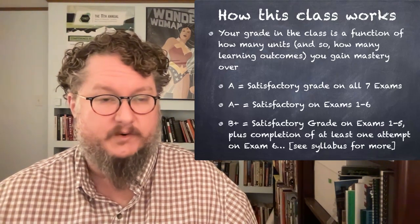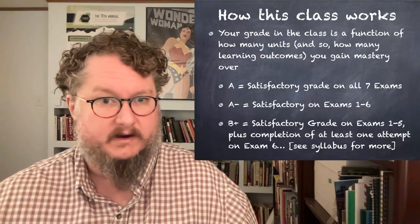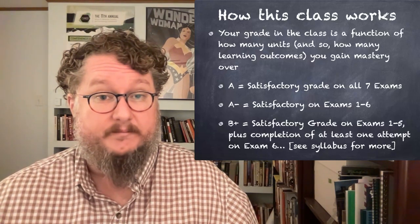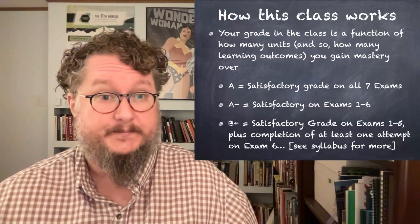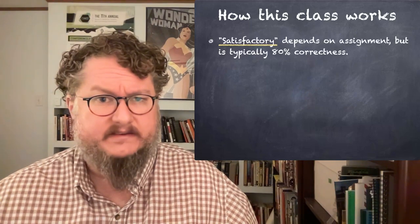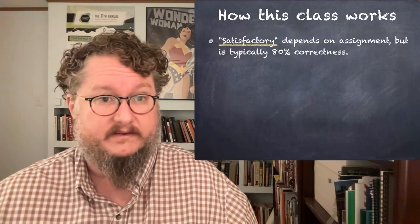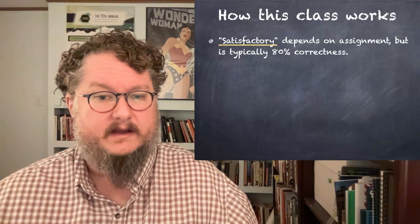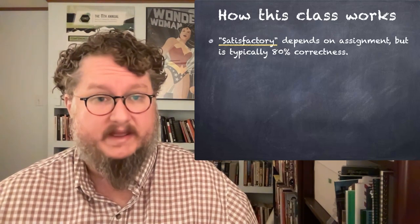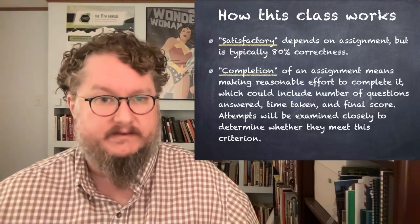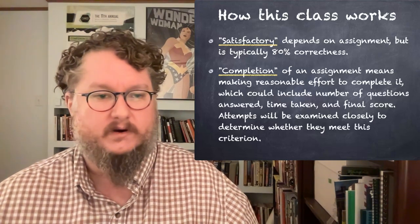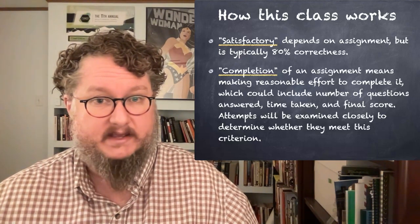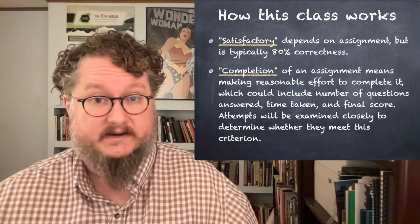So for each unit, you need to do the readings, watch the video lecture like this one and complete at least one practice problem set with the exception of this unit zero has no practice problems. It's just the introduction. So for this unit, just read the syllabus, watch this lecture. And that's what you do. And this will unlock the exam for that unit. If you get a satisfactory score on the exam, and it differs per exam, but most of them it's an 80% or better score, that will unlock the next unit. If you don't get that score, it doesn't mean you're done. You can retake the exam many times if you need to, although you do need to wait 48 hours and complete additional problem sets in order to unlock the next retake of the exam.